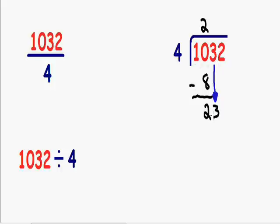4 goes into the number 23 five times. If we picked the number 6, it would be too big. So we have to pick the number 5. 4 times 5 is equal to 20.